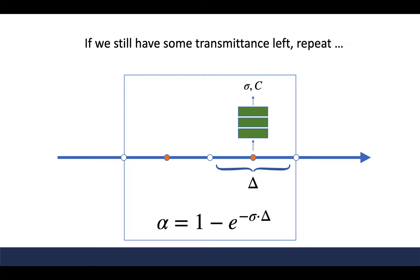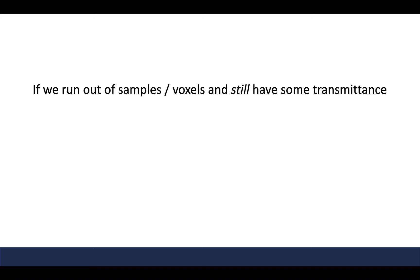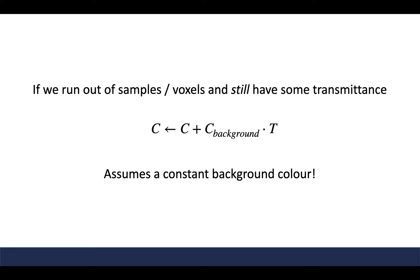If transmittance hasn't fallen below the threshold, we repeat the process for the next segment and decrement T. If we run out of samples and still have some transmittance remaining, we spend the rest of it on a constant background term to model the background of the whole scene. This is not the greatest modeling assumption and is a limitation of this method.